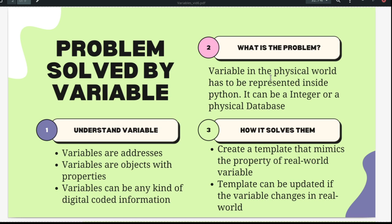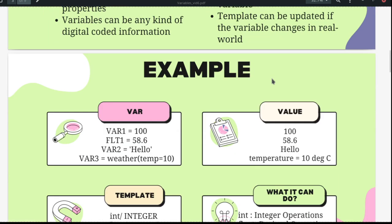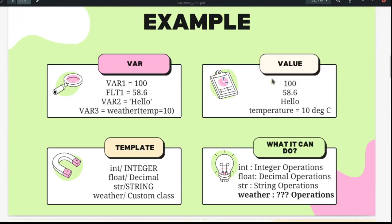These objects are created using a template. Here are some examples — we have four variables. The first three are pretty straightforward. We have var1 equal to 100, flt1 equal to 58.6, and var2 equal to hello. If you look at the output box on the top right, the values 100, 58.6, and hello come out exactly as given.